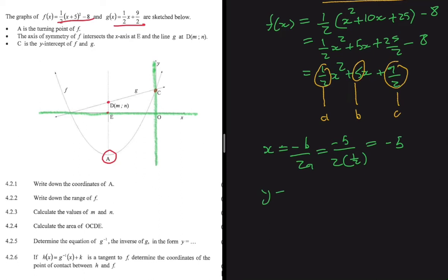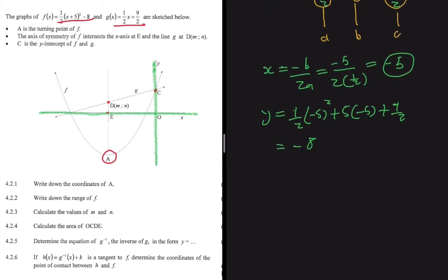Now y is found by substituting x = -5 into the equation: f(-5) = ½(-5)² + 5(-5) + 9/2. Putting this into the calculator gives y = -8. So the coordinates of A are (-5, -8).